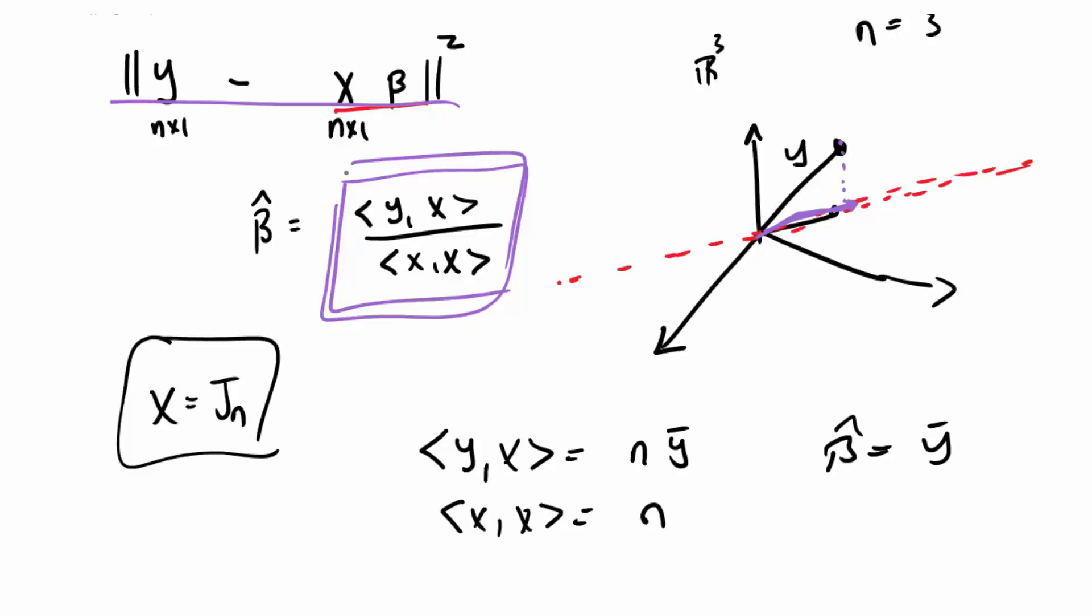So hopefully, commit this formula to memory because it's a very useful one. I would say there's this startling fact, too, which is that you can develop all of multivariable regression by considering only this one example, which is regression to the origin.